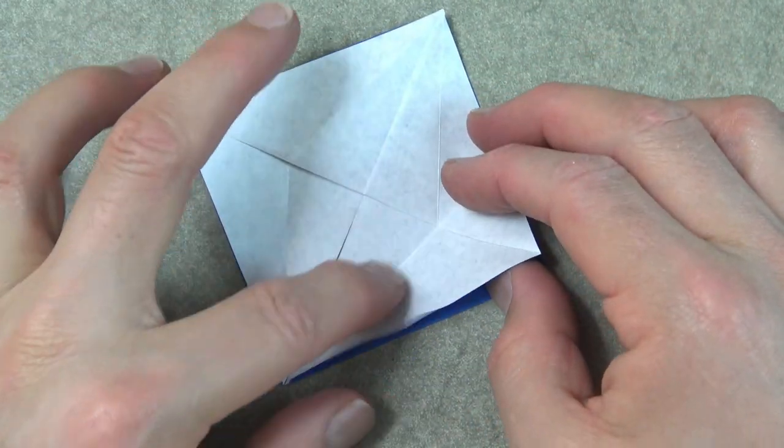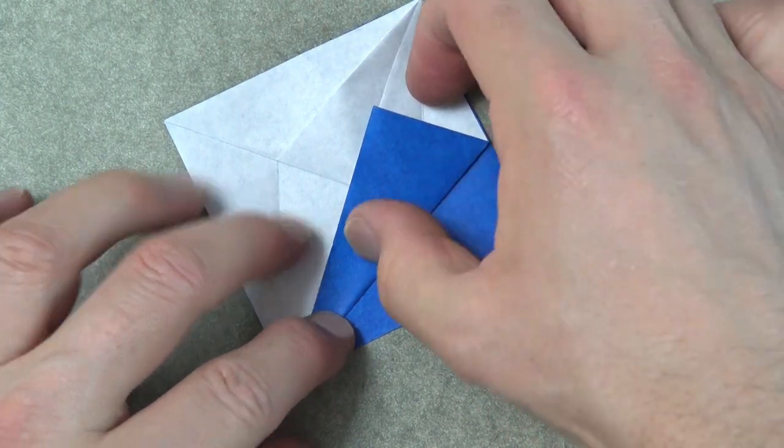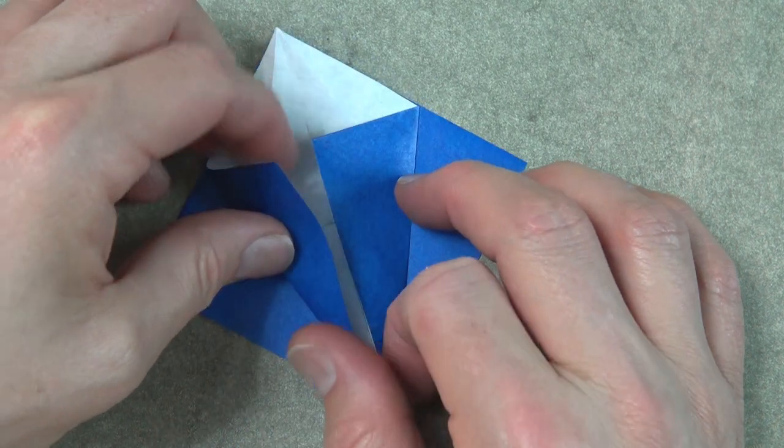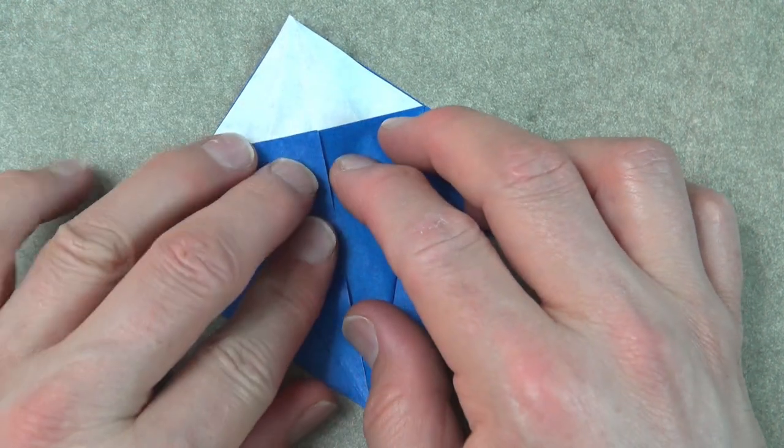And refold this flap on the existing crease. And refold this flap on the existing crease. So the two flaps overlap again.